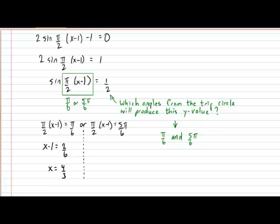Next, let's determine the other x value for which the angle produced will be 5 pi over 6. Moving the pi over 2 to the other side of the equal sign will give us x minus 1 equal to 10 over 6. And isolating the x will give us a value of 8 over 3. This means that the other zero for the sine function will occur at x equals 8 over 3.